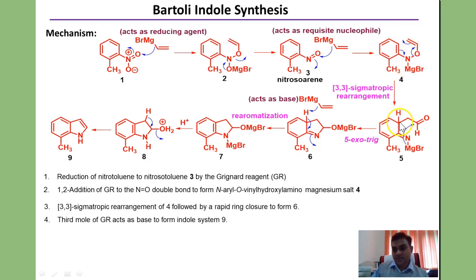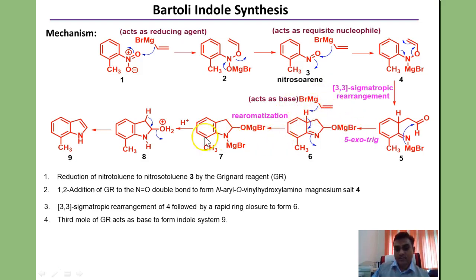The intermediate then undergoes subsequent cyclization to form the 5-membered ring. This is described as a 5-exo-trig cyclization according to Baldwin's rules, because a 5-membered ring is formed by attack of nucleophilic nitrogen on the trigonal carbon, opening on the outside. The third equivalent of vinylmagnesium bromide then helps maintain aromatization of the benzene ring, and aqueous workup gives the 7-substituted indole. So three equivalents of Grignard reagent are needed: one as reducing agent, one as nucleophile, and one as base.